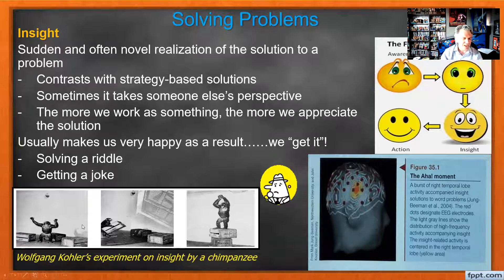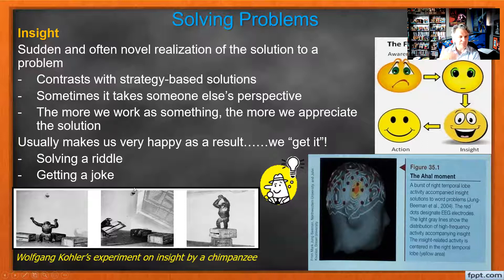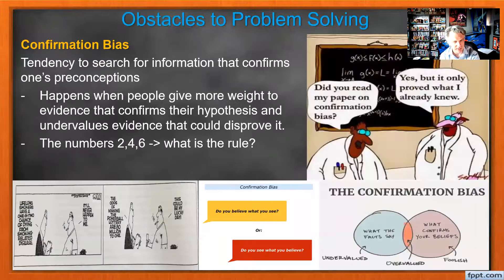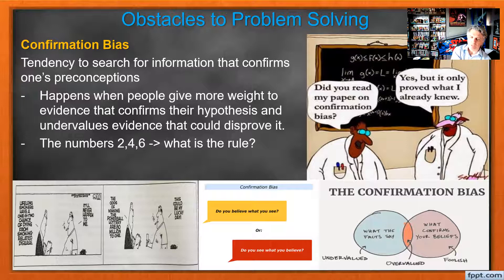Köhler did this experiment with chimpanzees where he put some bananas up high, and they finally figured out to stack boxes together, climb up, and get the bananas. Each successive time it became easier — it's like the cat we talked about at the beginning of this unit hitting the lever, opening the door. The cat now has insight of how to get its food. It's learning that's occurred. But a lot of times our insight can be limited by what's known as confirmation bias.